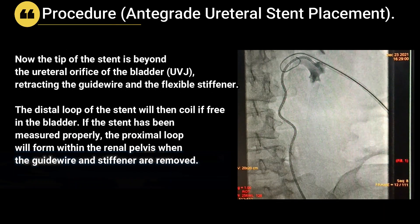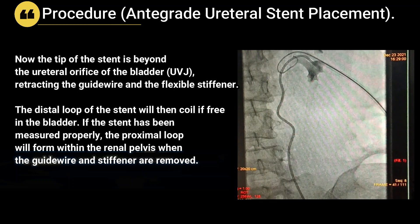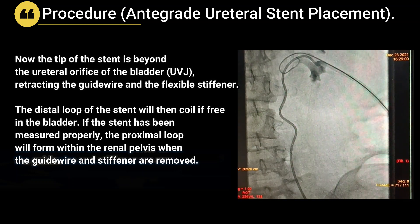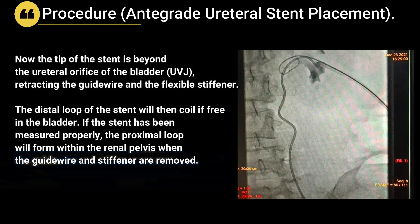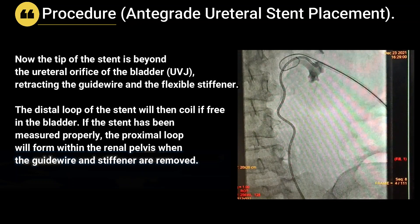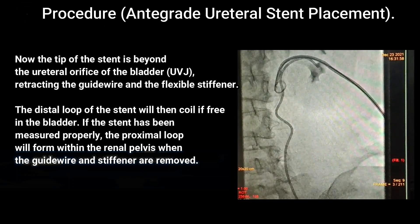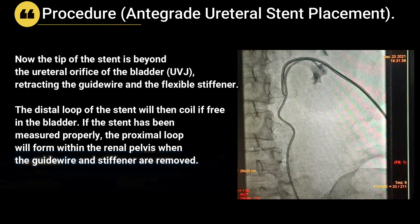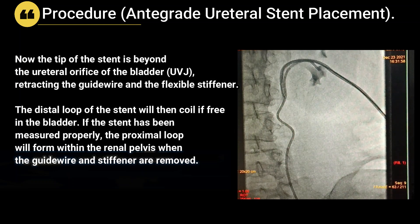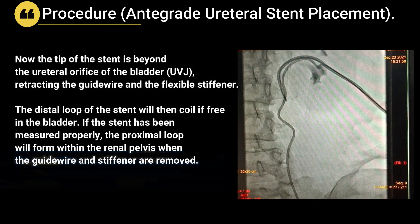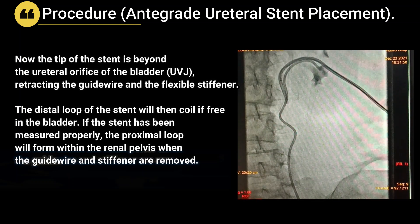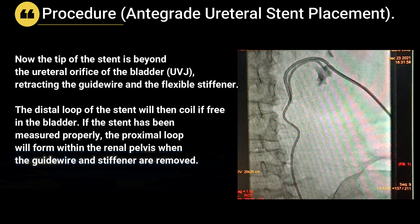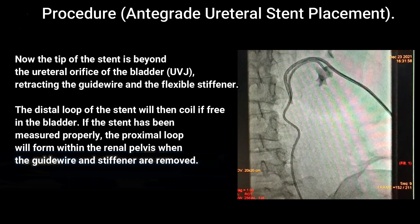Once the tip of the stent is beyond the ureteral orifice of the bladder, the guide wire and flexible stiffener are retracted. The distal loop of the stent will then coil and free in the bladder. If the stent has been measured properly, the proximal loop will form within the renal pelvis when the guide wire and stiffener are removed.